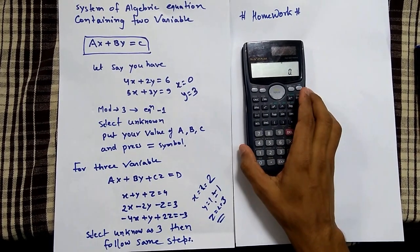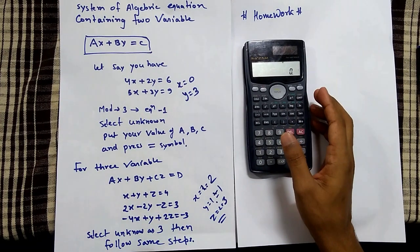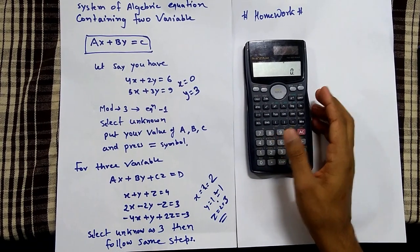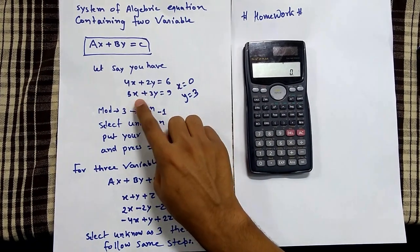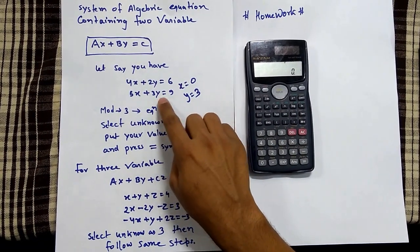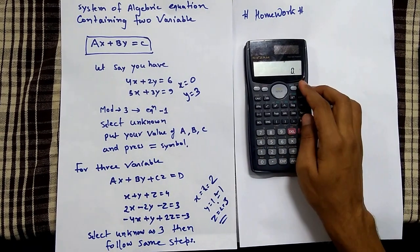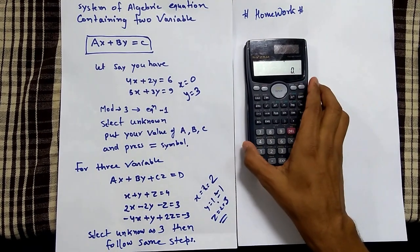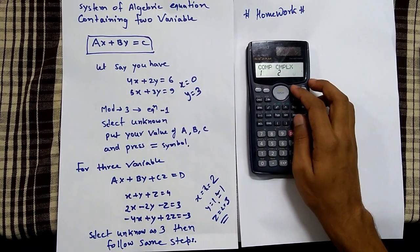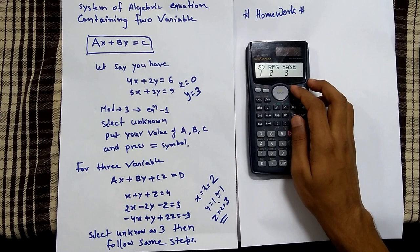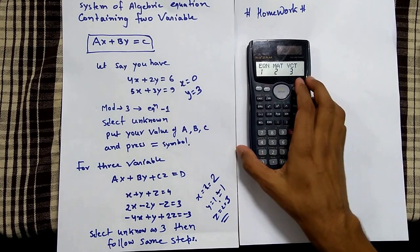Now we'll start. For example, I have taken 4x plus 2y equals 6 and 5x plus 3y equals 9. What you have to do is press the mode button twice, then press 3.